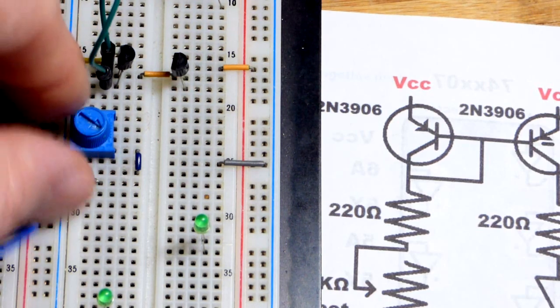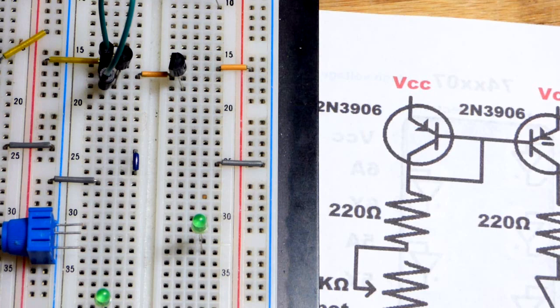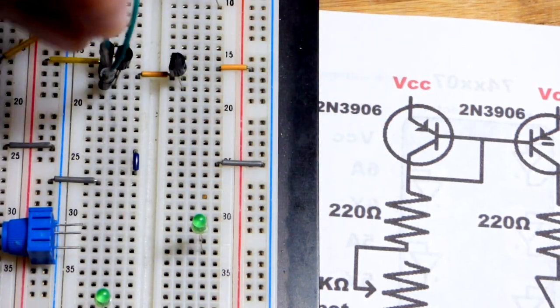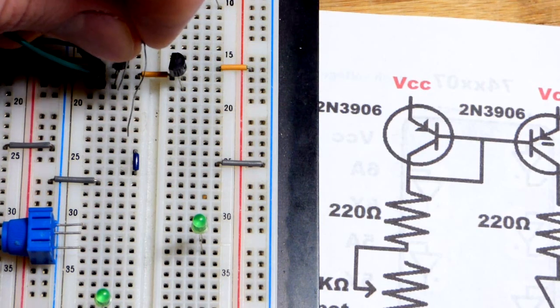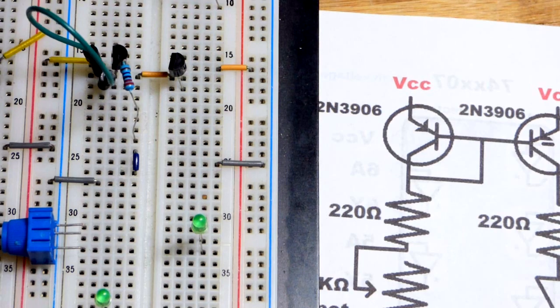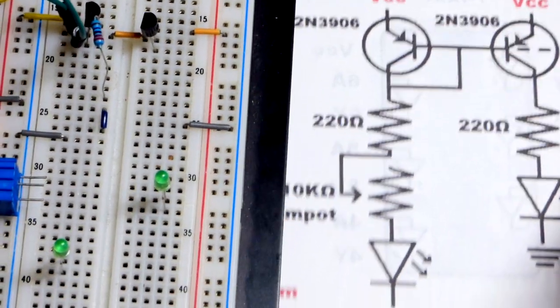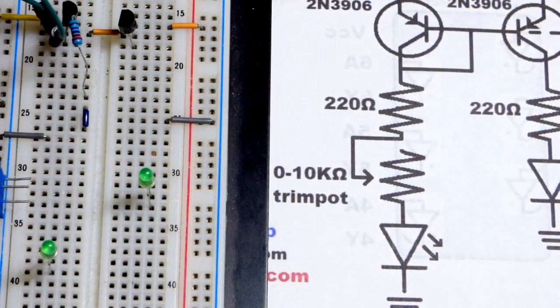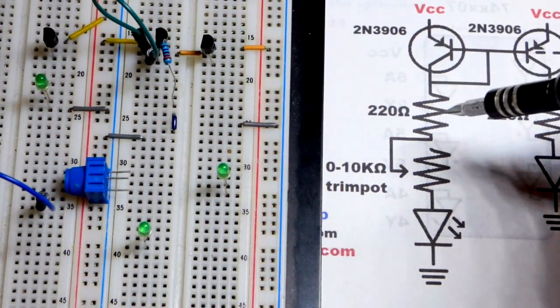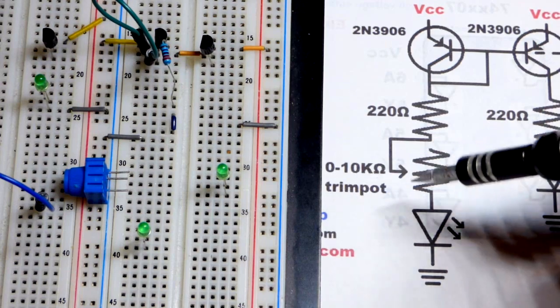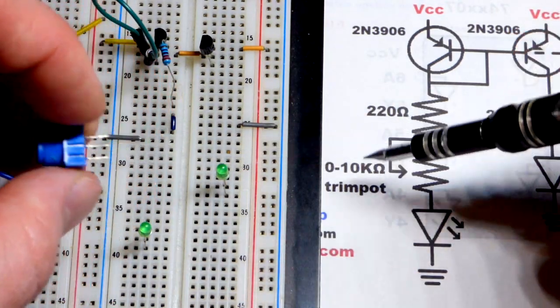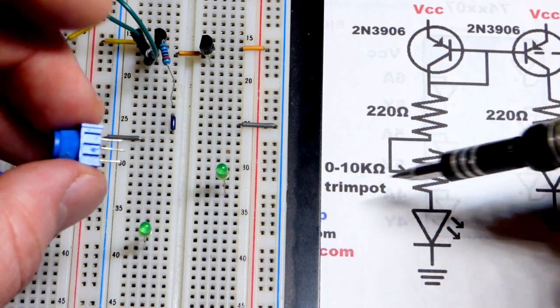We're going to take a 220 ohm resistor so that we have a minimum of 200 ohms of resistance. Put that from the collector to one spot away from that jumper there. So now we have the trim pot, which will give us our variable amount of current. So 220 ohms is our minimum.